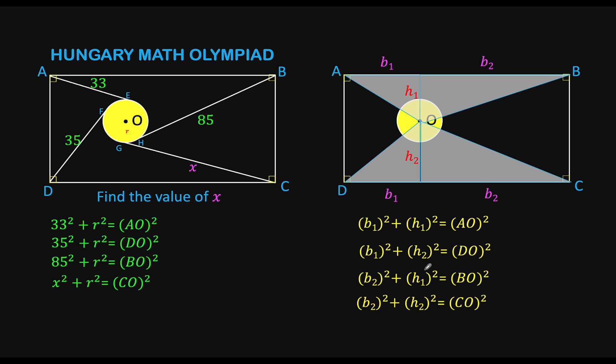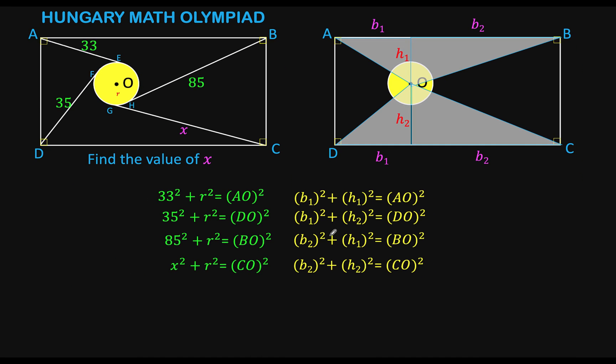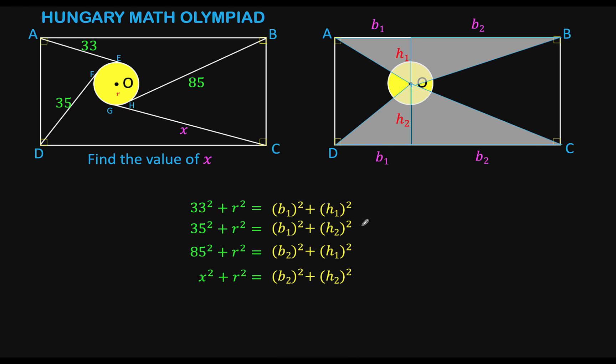Now, let's put these two sets of resulting equations side by side. And notice that the right side here and the right side here at the other side are equal respectively to each of these equations. Which means that their corresponding left members are also equal, resulting to these set of equations. And let's call them as equations 1, 2, 3, and 4. We have variable X, variable R, variable B sub 1, B sub 2, H sub 1, and H sub 2. So there are six variables. And we only have four equations.